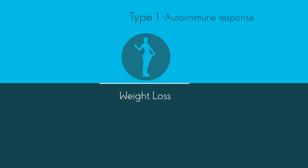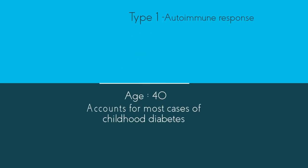Whilst type 1 diabetes can appear at any age, it usually appears before the age of 40, and type 1 accounts for most cases of childhood diabetes.